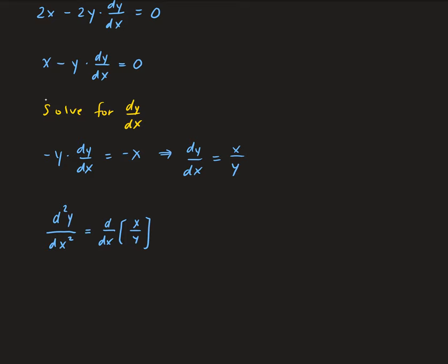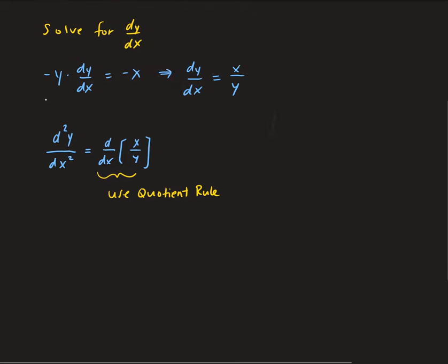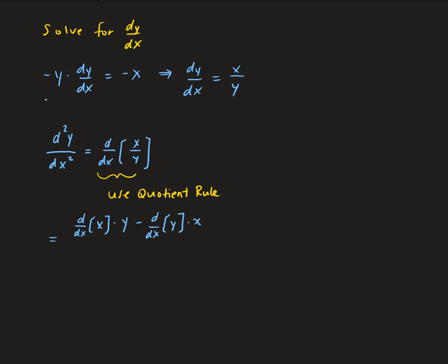Here we need to use the quotient rule for derivatives. Applying the quotient rule — derivative of the numerator times the denominator, minus the derivative of the denominator times the numerator, all divided by the denominator squared — we get: the derivative of x is 1, so we get y minus dy/dx times x, all divided by y squared.